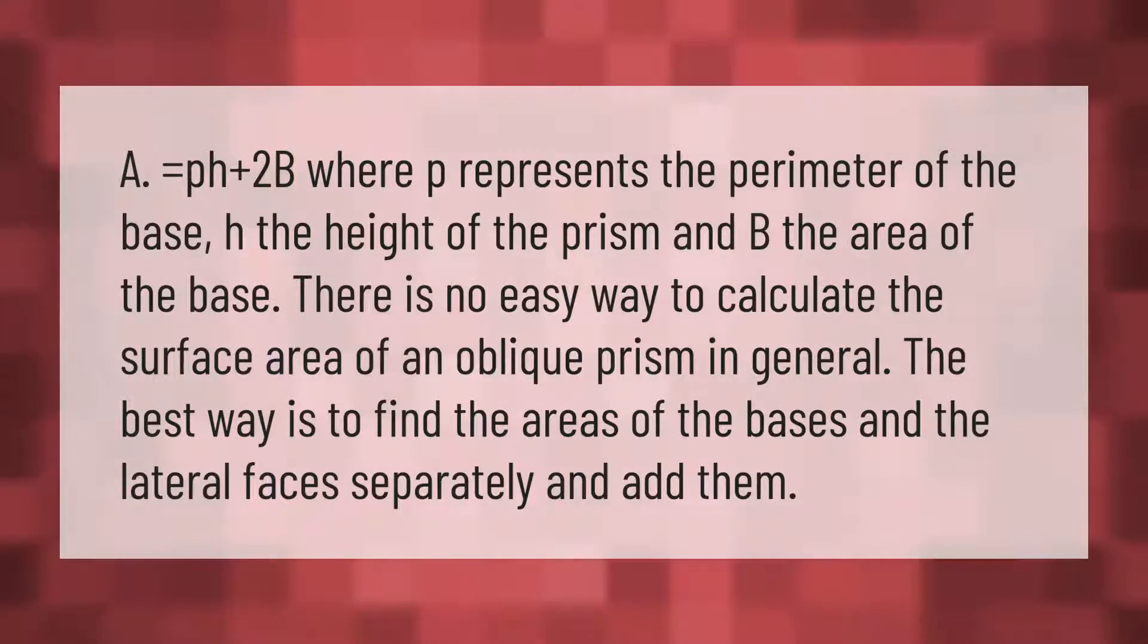A = ph + 2B, where p represents the perimeter of the base, h the height of the prism, and B the area of the base. There is no easy way to calculate the surface area of an oblique prism in general. The best way is to find the areas of the bases and the lateral faces separately and add them.